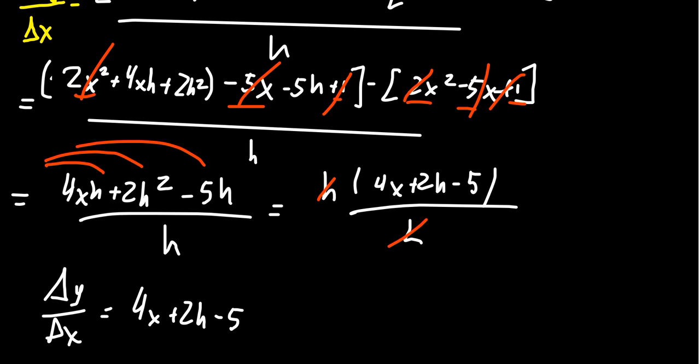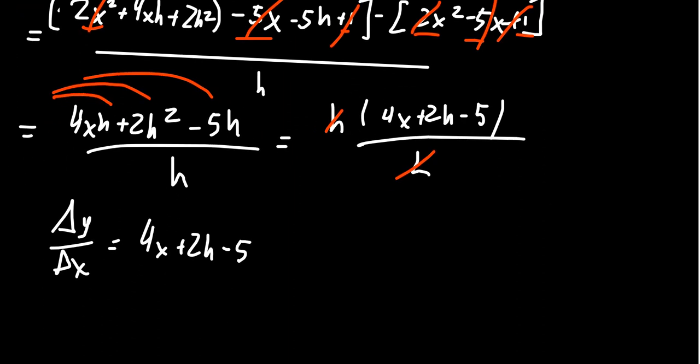And so then if we want to figure out what happens as h goes to 0, that is we want to calculate the instantaneous rate of change, dy/dx, this is when h goes to 0, you're going to get 4x plus 2 times 0 minus 5. This then becomes 4x minus 5.